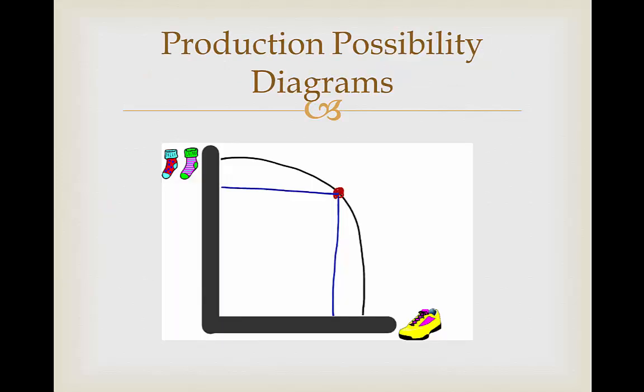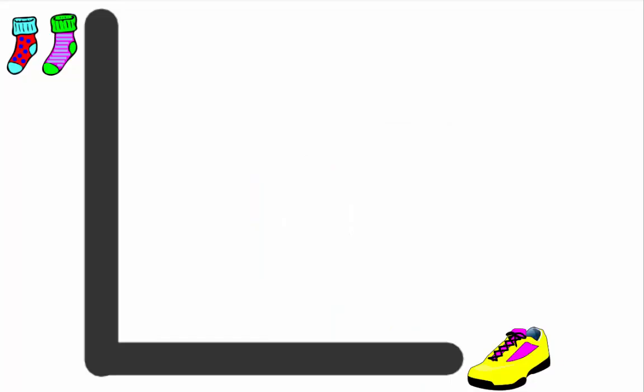Here we're going to show you now how a production possibility diagram is going to show each one of these features. So here we have our production possibility diagram. As you can see, it's a set of axes and each one of the axes is labeled as socks and shoes. So what this diagram is going to show is how many socks and shoes an economy can produce at one point in time.